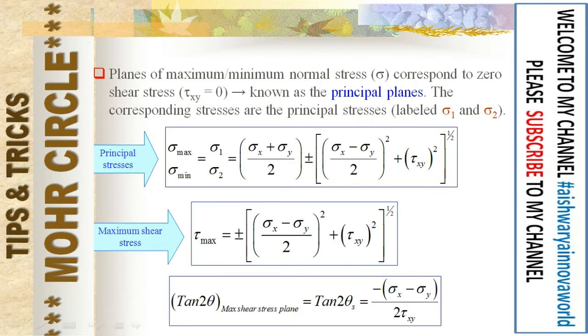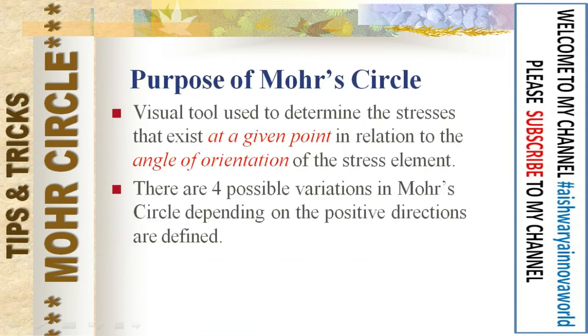The maximum shear stress tau_max = ± √[((sigma_x − sigma_y)/2)² + tau_xy²]. In the case of maximum shear stress, tau_xy will be zero, so you get (sigma_x − sigma_y)/2. There is also a formula for the angle that the plane of the axis creates with maximum shear stress.